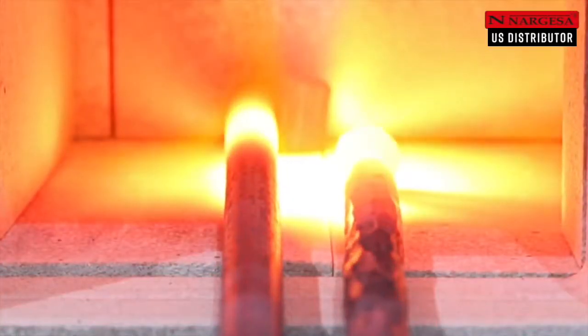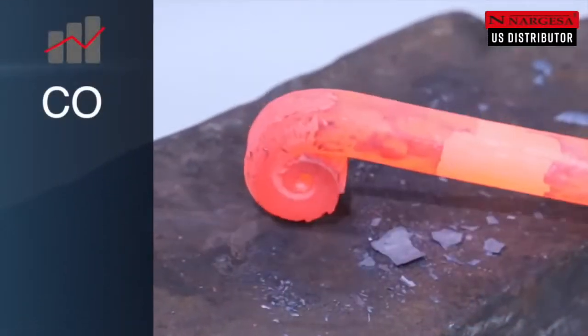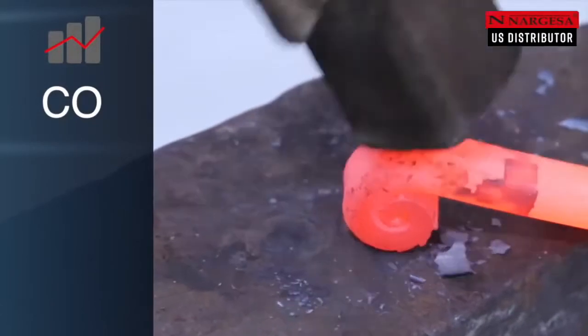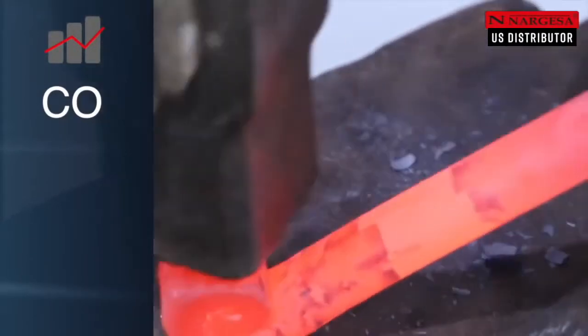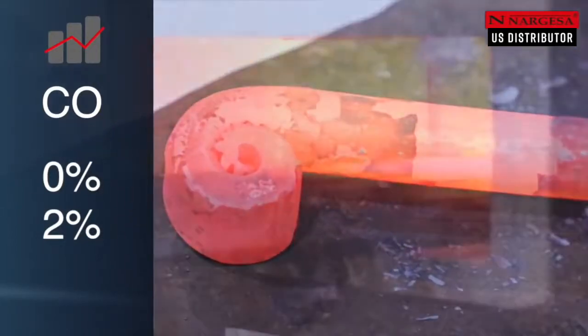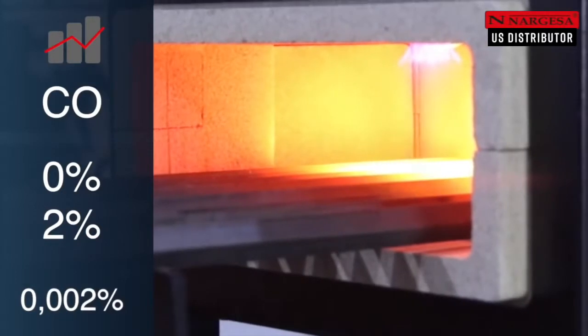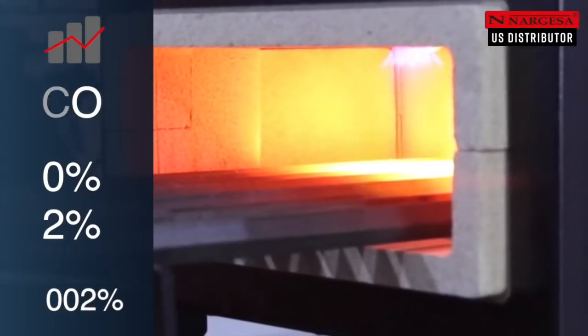The carbon monoxide emissions was another important issue to bear in mind during the designing process and to keep the eco-functionality of the furnace. In a normal environment, this value ranges between 0 and 2 percent. The emissions released by the H2 furnace are 0.002 percent, totally harmless for health and for the environment.